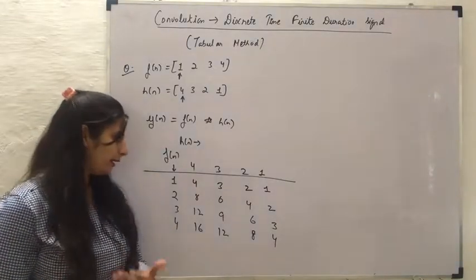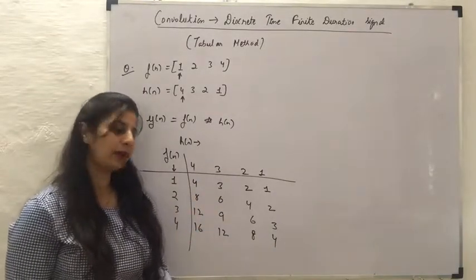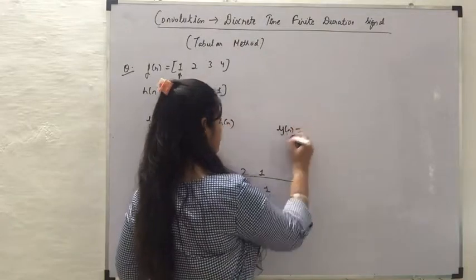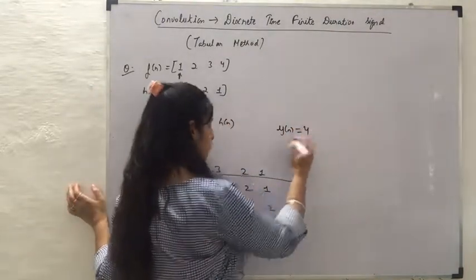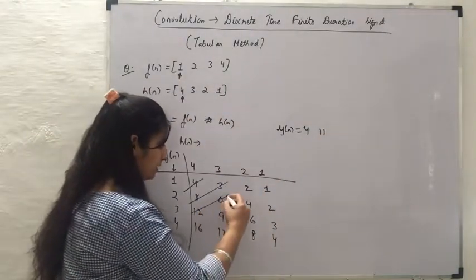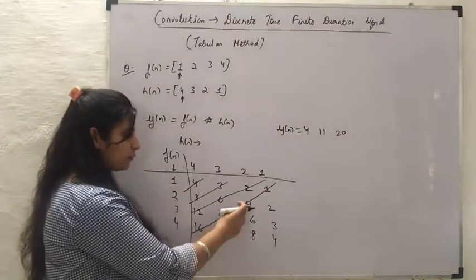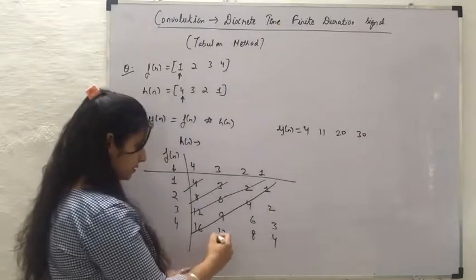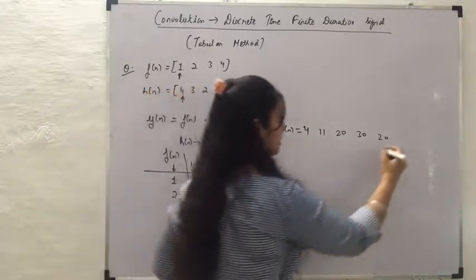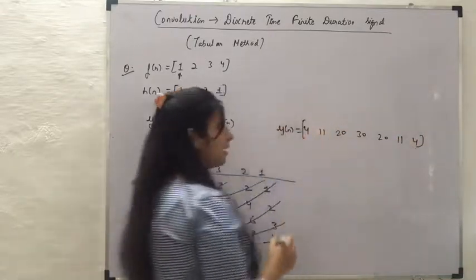To find y of n, we take the sum of these values diagonally, starting from the first diagonal. The first value is 4. Next diagonal: 8 plus 3 equals 11. Next: 12 plus 6 plus 2 equals 20. Next: 16 plus 9 plus 4 plus 1 equals 30. Then: 12 plus 6 plus 2 equals 20. Next: 8 plus 3 equals 11. And the last value is 4. So y of n is {4, 11, 20, 30, 20, 11, 4}.